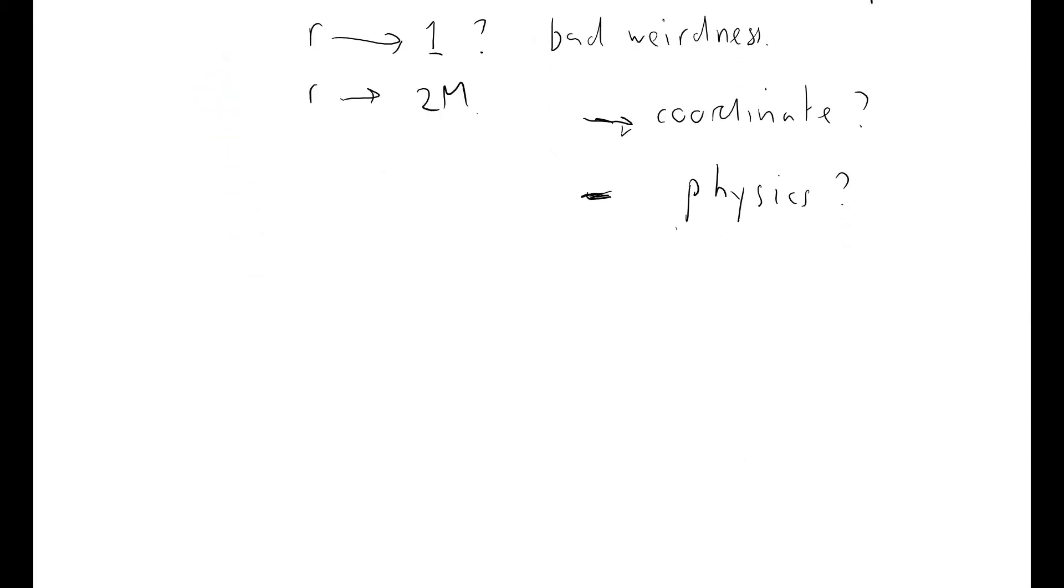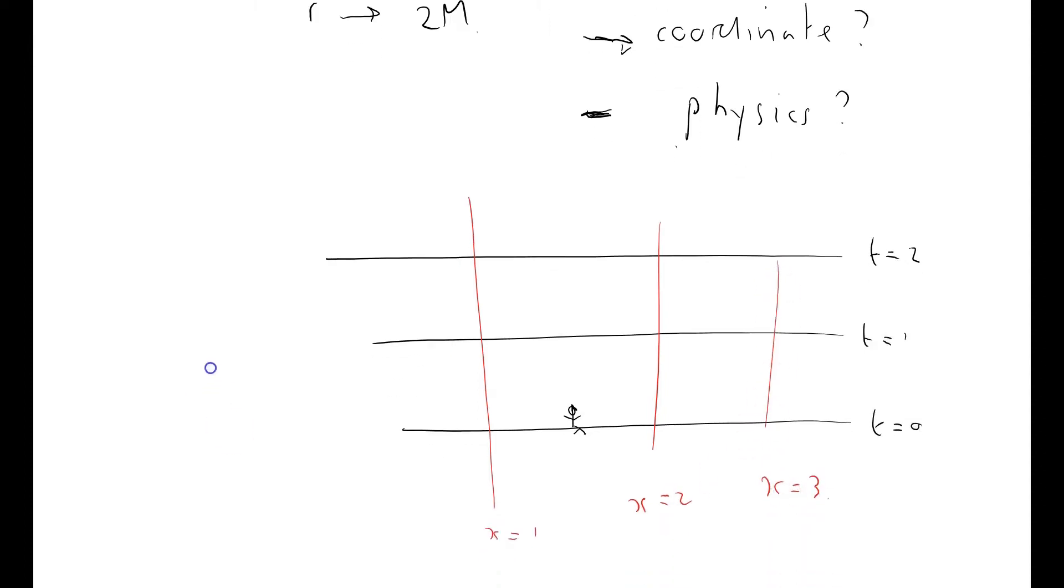And I'll show you how that might work right now. If I have a little event here, here's me at an event, I can choose some coordinates here. These are coordinates of t equals 0, t equals 1, t equals 2. And I can choose, I'm going to choose in red, that's going to be x equals 1, x equals 2, and x equals 3. Perfectly straightforward coordinates.